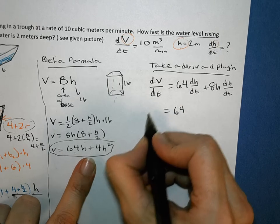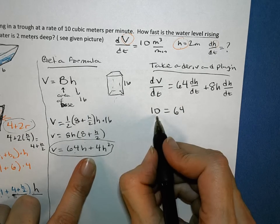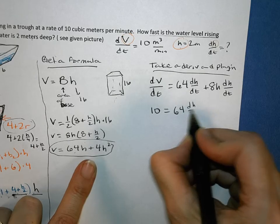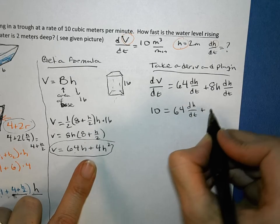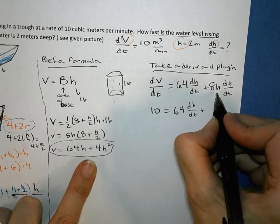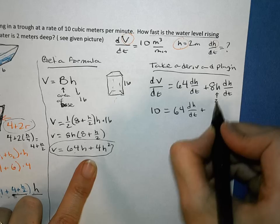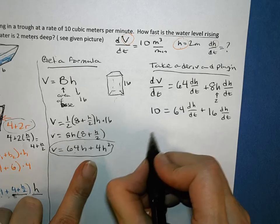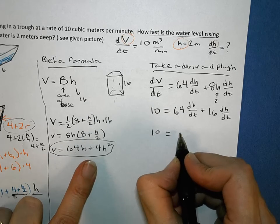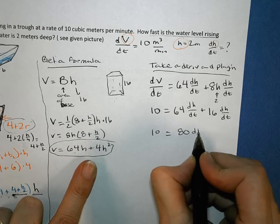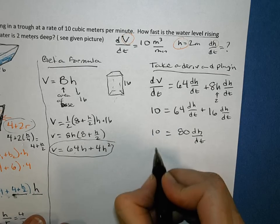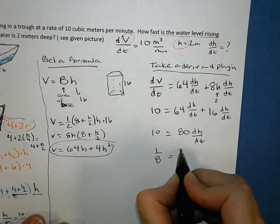And then we're just going to plug in. dV/dt was 10. It was gaining 10 cubic meters per minute because it was filling up. dh/dt is the thing we don't know. H was 2. I'm putting in a 2 right there. So 8 times 2 gave me 16 dh/dt's. And I could add the 64 and 16 up, and I would have 80 dh/dt's. And then when I divide by 80, I will have 1/8 is my dh/dt.